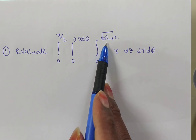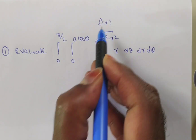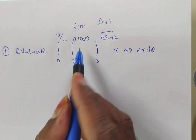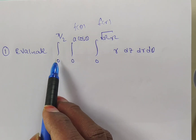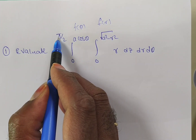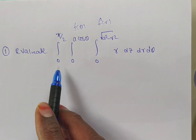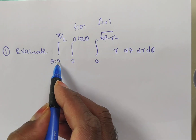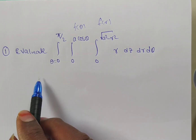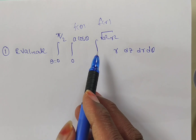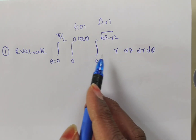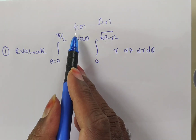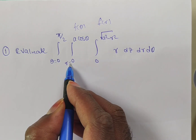Here you observe it is a function of r, so I am writing simply f of r. It is also a function of theta. The outermost limit is 0 to pi by 2. You know that 0 to pi by 2 is an angle only, so angle is obviously the limit for theta. So theta limits are identified.